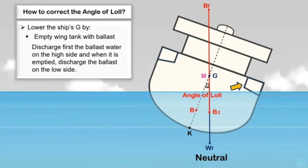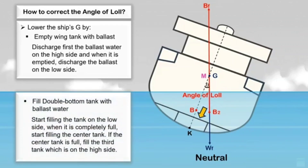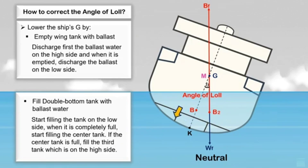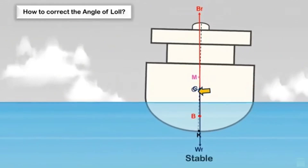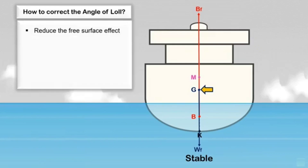Another way to lower the ship's G is through ballasting. Select a subdivided double bottom tank and fill it with ballast water in this sequence: if divided into three compartments, start filling the tank on the low side; when the low side tank is completely full, start filling the center tank; when the center tank is full, fill the third tank on the high side. If all tanks are completely full and the ship's center of gravity is below the metacenter, the ship will return to its upright condition.